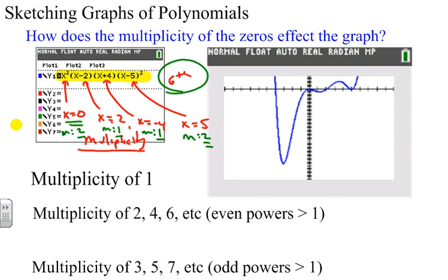So the multiplicities add together equal the degree of the polynomial. Multiplicities add together equal degree of polynomial. That's kind of a little fact that you probably should know.